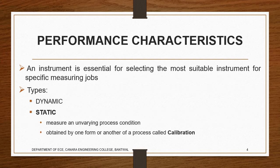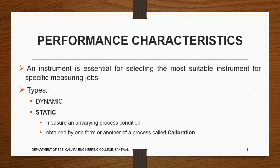Next we will be focusing on the performance characteristics of these instruments. What are these performance characteristics? We generally categorize them into dynamic and static. Dynamic and static help us see which are the suitable instruments for specific measuring jobs. Dynamic refers to a varying process condition and static refers to an unvarying process condition. Whatever results have been obtained have to be calibrated, so that will be easy for us.